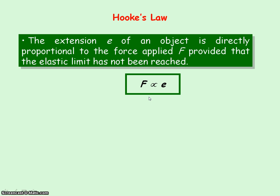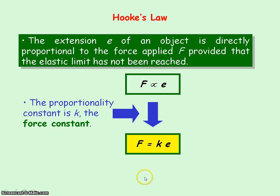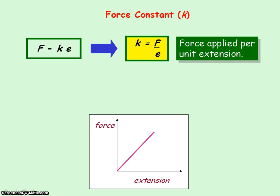We can express Hooke's law mathematically. To get an equation, we need a proportionality constant — the force constant, also known as the spring constant. So Hooke's law becomes: force applied equals the force constant times the extension, F = ke. The force constant is equal to the force applied per unit extension, and its units are newtons divided by metres — newtons per metre.